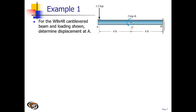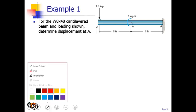We could also include the beam weight in the deflection calculations, but we're going to skip that. We're going to just look at the contribution from the 1.2 kip and the 2 kip-foot. We need to determine the displacement at point A, and that is going to come from those two cases.